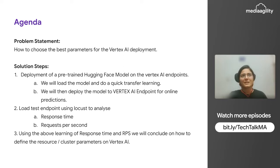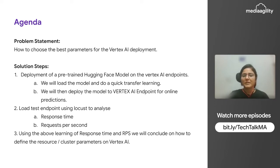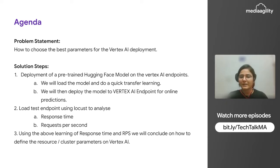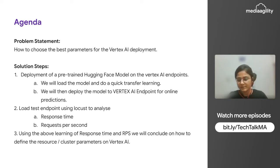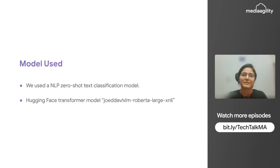When we train a model on Vertex AI, we need to deploy it for online predictions only. Batch prediction we can do without deployment as well. And then we'll load test it to analyze latency and requests per second, and based on this, we'll define our scaling parameters.